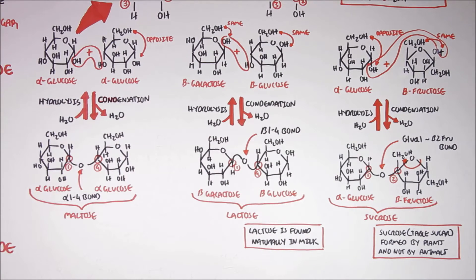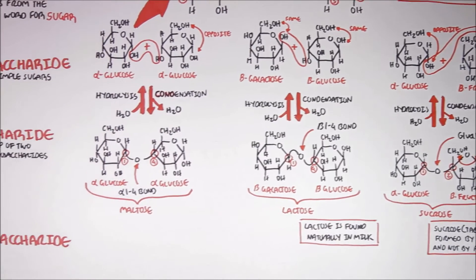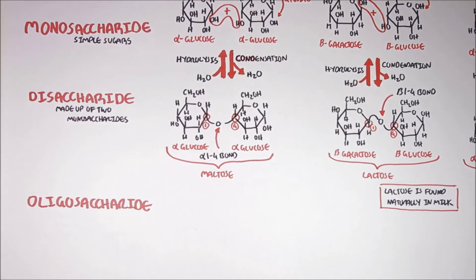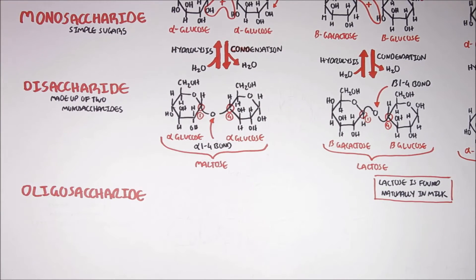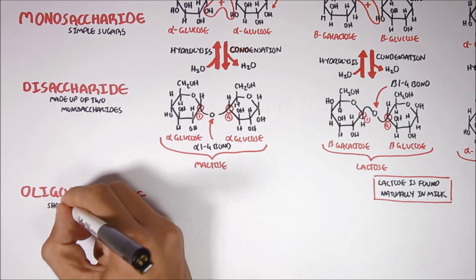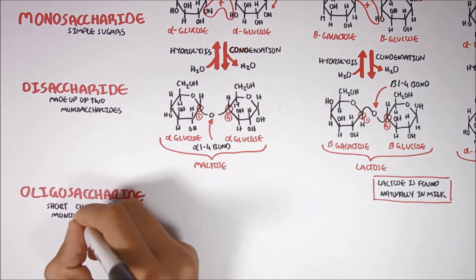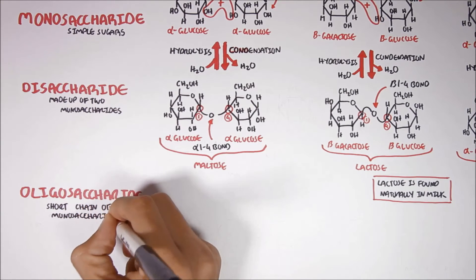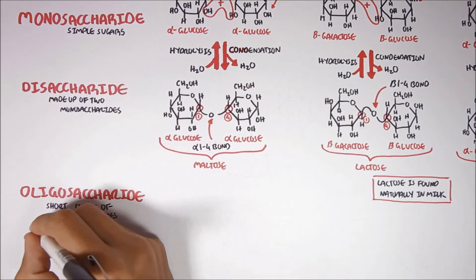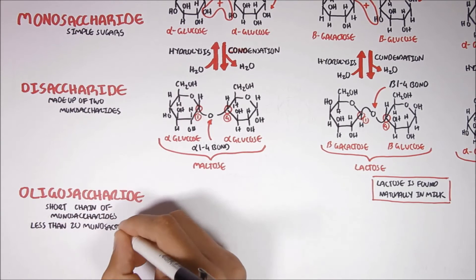So the disaccharides — maltose, lactose and sucrose — are all good examples that we encounter in our normal diet. Now let's look at oligosaccharides. Oligosaccharides basically consist of short chains of monosaccharides, typically less than 20 monosaccharides linked together. In fact, a disaccharide can be referred to as an oligosaccharide.